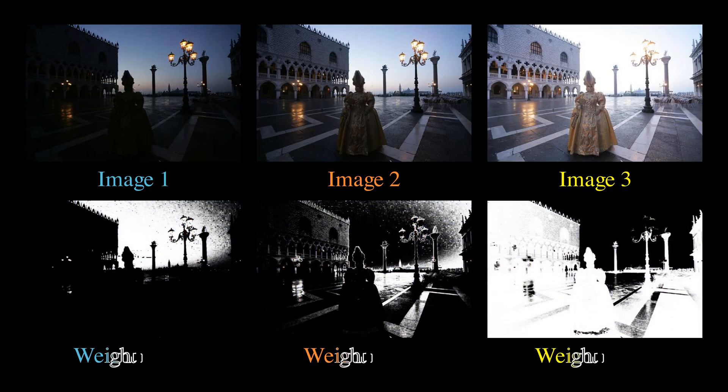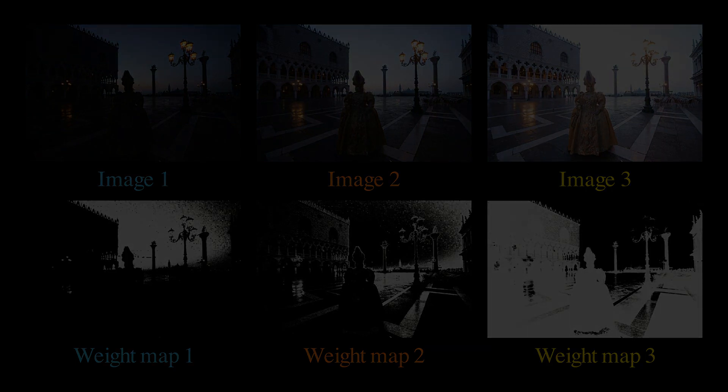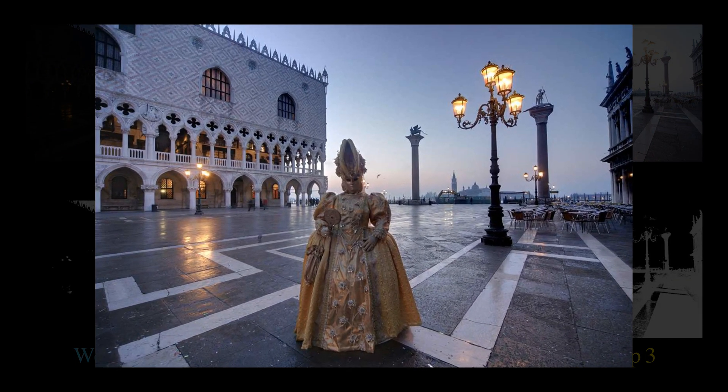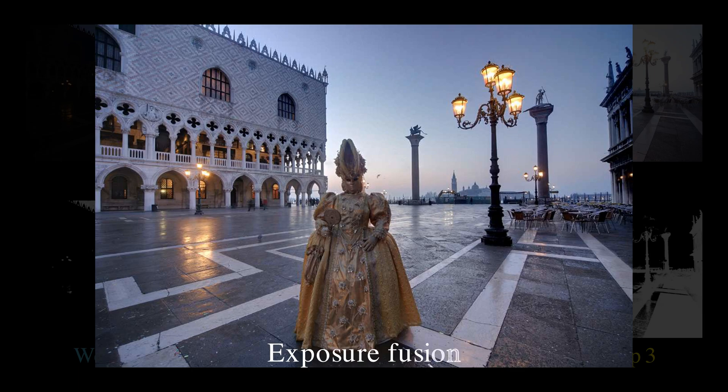For each image, we design a weight map that measures pixel quality like intensity saturation and contrast. We can then use these weight maps and blend all the images into one using Laplacian pyramid blending. The blended image contains all the details in different regions. This is called exposure fusion. It highlights the wide applicability of Laplacian pyramid blending.